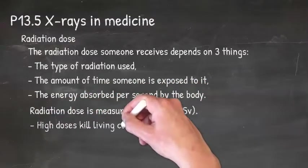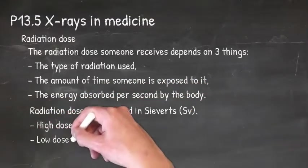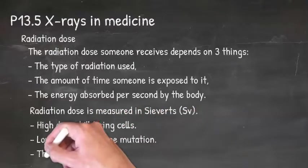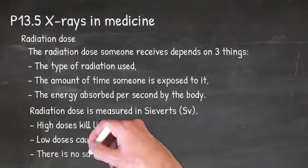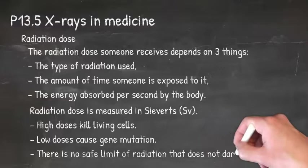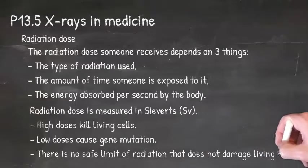High doses can kill living cells, while low doses cause gene mutation. There is no known safe limit of radiation that does not damage living cells.